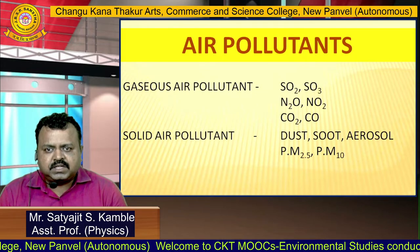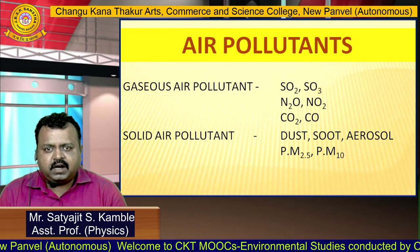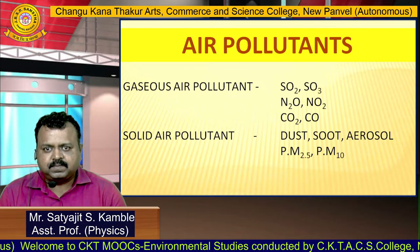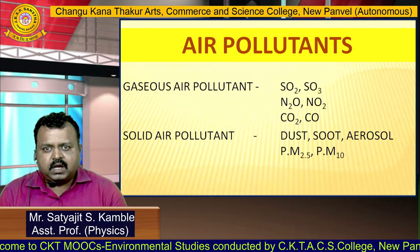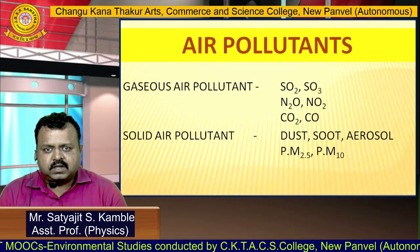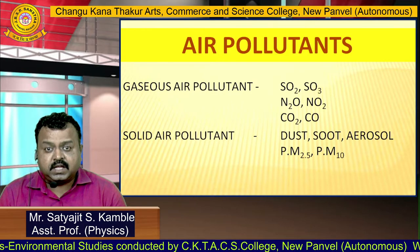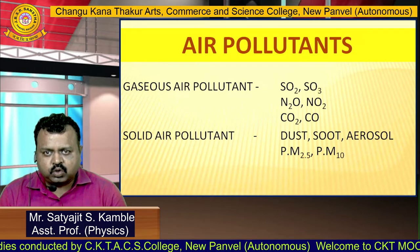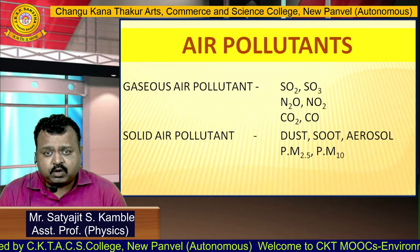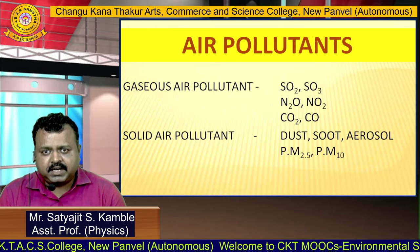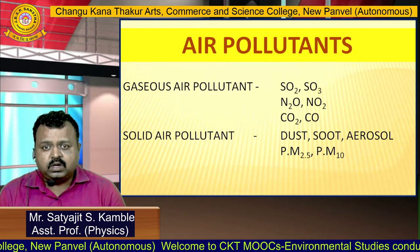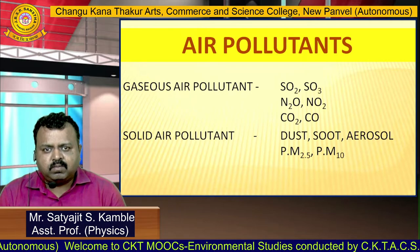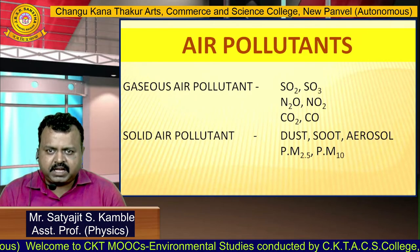Air pollutants are those substances which cause unwanted and undesirable effects on human beings when they enter the atmosphere. Broadly, air pollutants can be divided into two types. Gaseous air pollutants are gaseous in nature. For example, oxides of sulfur — SO2, SO3 — oxides of nitrogen like N2O (nitrous oxide) and NO2 (nitrogen dioxide), carbon dioxide and carbon monoxide. These are also gaseous air pollutants.